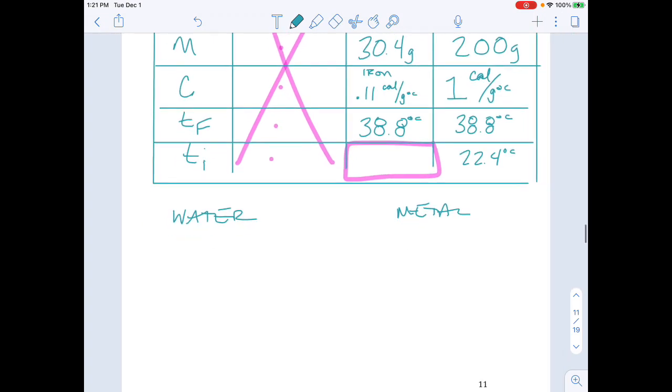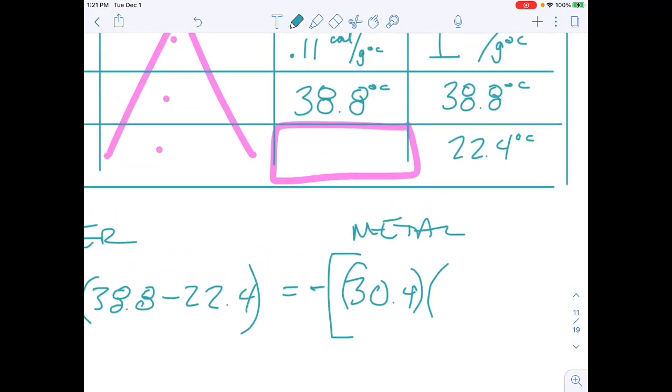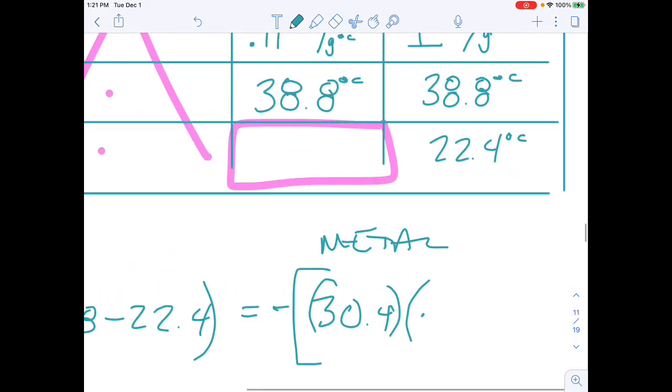And let's lay out my information. My water is 200 grams, specific heat of 1, temperature final of 38.8, and temperature initial of 22.4. Set that equal and opposite, negative, to the metal information. The metal had a mass of 30.4. We're calling it iron, so it's 0.11. Temperature final 38.8 minus temperature initial.